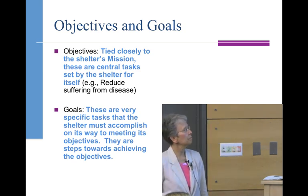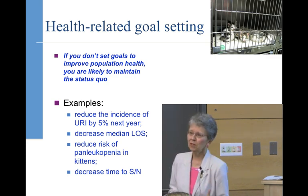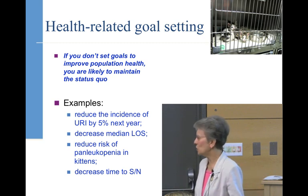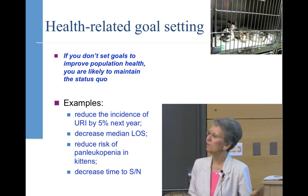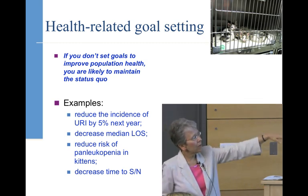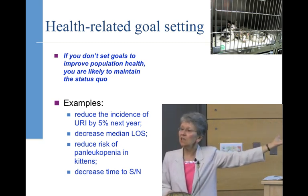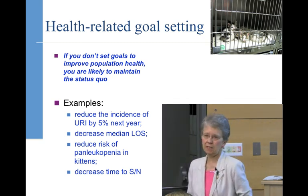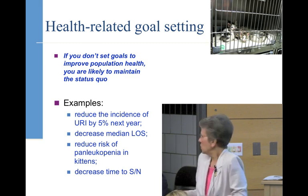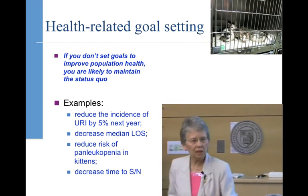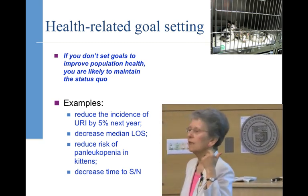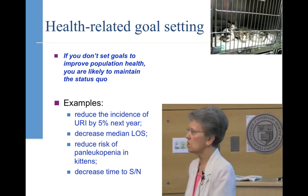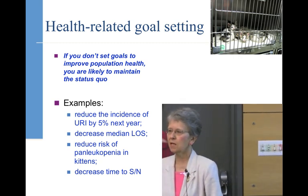I strongly believe that at the population level, if you don't set goals, you're likely to stay where you are. I don't think we've ever been in a shelter that couldn't improve the overall population health of their animals. Make them specific — reduce the incidence of URI, decrease the median length of stay. We know that the longer a dog or cat spends in your shelter, the more likely it is to get sick. The longer you're there, the more likely you are to get sick. Anything we can do to minimize length of stay is a powerful approach to reducing disease.